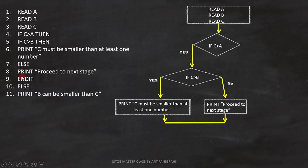That means, if the condition on line number 4 fails, line number 11, print B can be smaller than C will execute. Since it is a statement, we can represent it like this on flowchart.